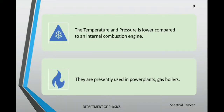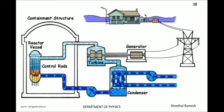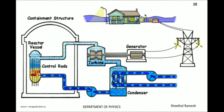When compared to internal combustion engines, temperature and pressure are lower. Examples include their use in power plants and gas boilers. Looking at the figure, the water in the reactor vessel gets heated and as a result steam is produced. The steam produced rotates turbines, and this rotation constitutes mechanical work by which electricity is produced. The generator then converts it to electricity. The excess steam is then condensed back to water, which can be used again.